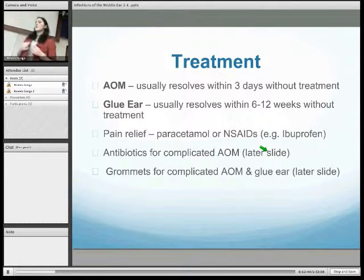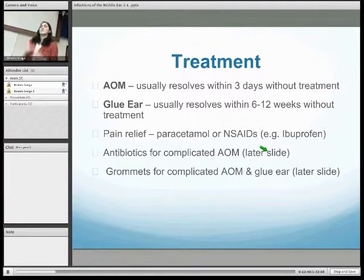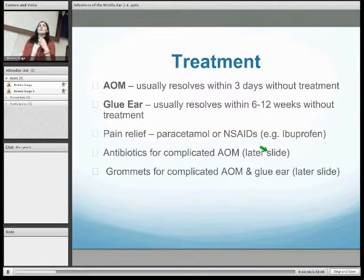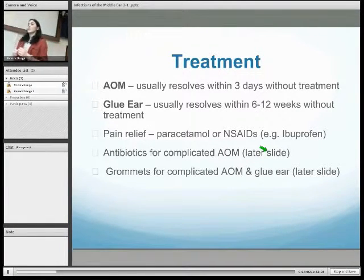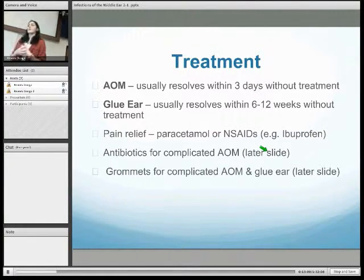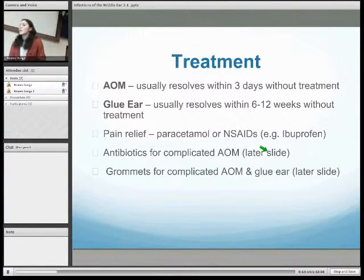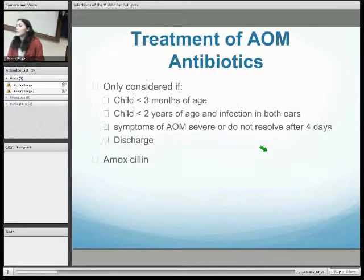For treatment of both acute otitis media and glue ear, you generally go for something conservative first — leave it and see what happens, as there are associated complications with going straight to antibiotics or surgical intervention. Acute otitis media usually resolves within three days, and glue ear within six to twelve weeks. Whilst this is occurring, it's good to recommend over-the-counter pain medications such as paracetamol or NSAIDs like ibuprofen.